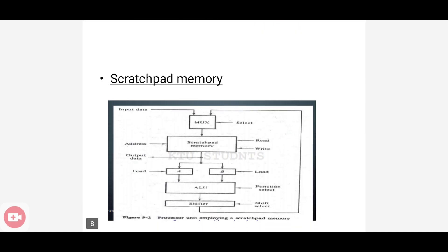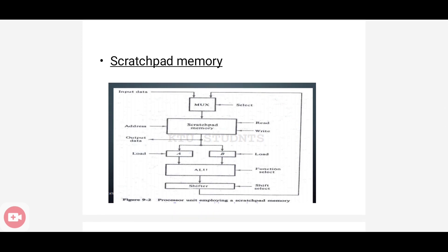The next mechanism for processor design is scratch pad memory. This is the architecture of scratch pad memory. Here there is a multiplexer and a scratch pad memory. A and B are two registers. ALU is the arithmetic logic unit. Shifter is for implementing shift operations. These are the components present in scratch pad memory.